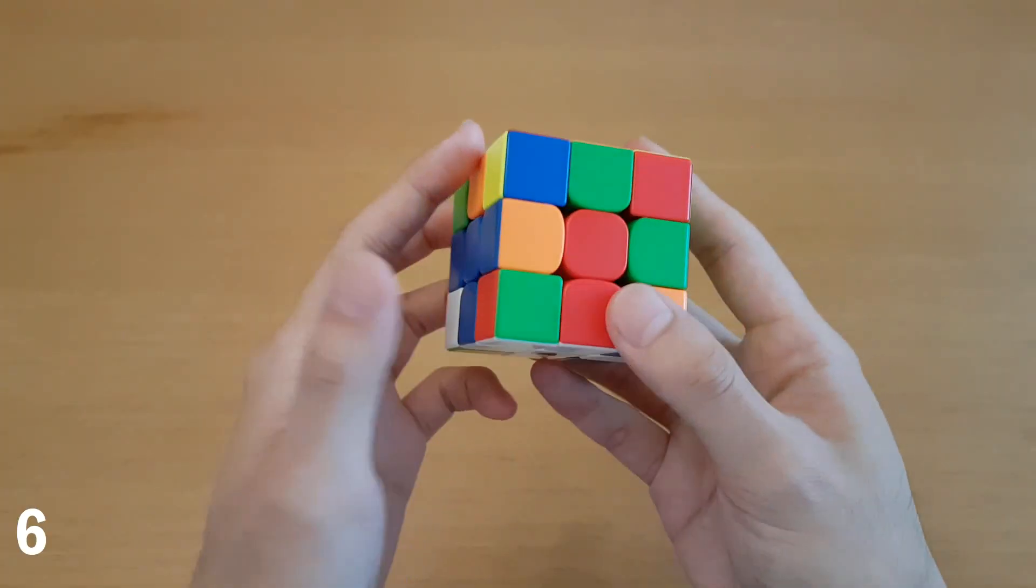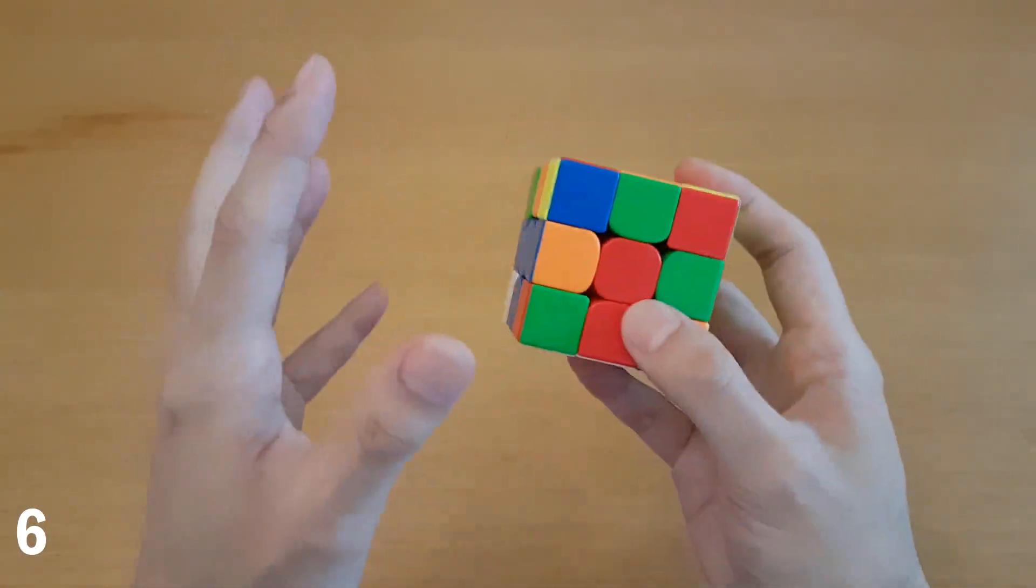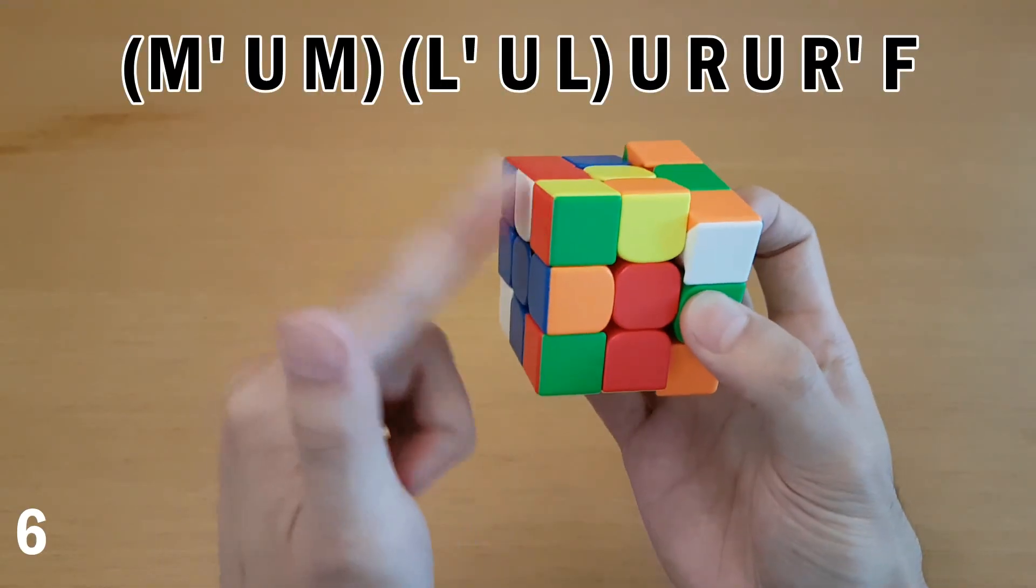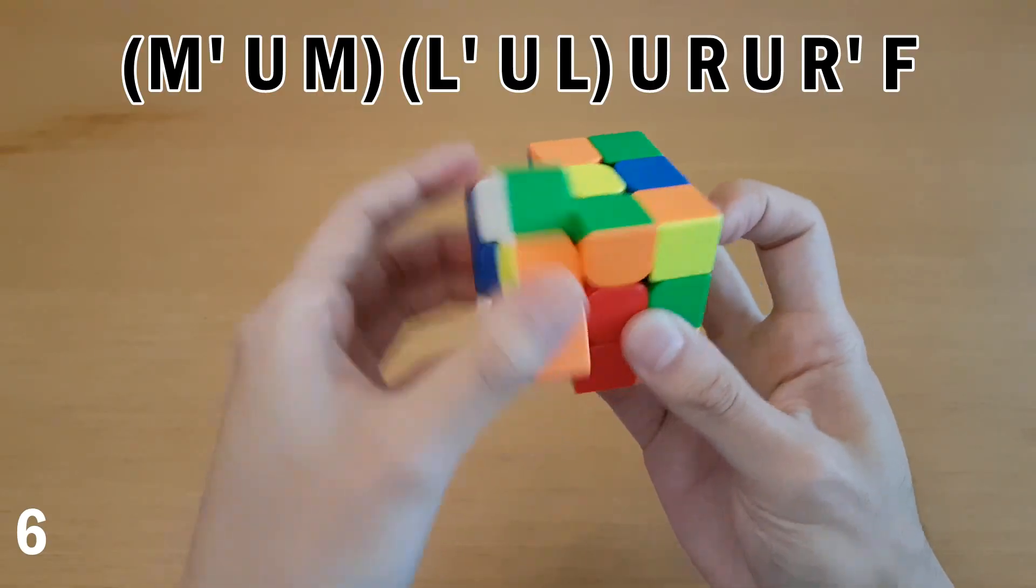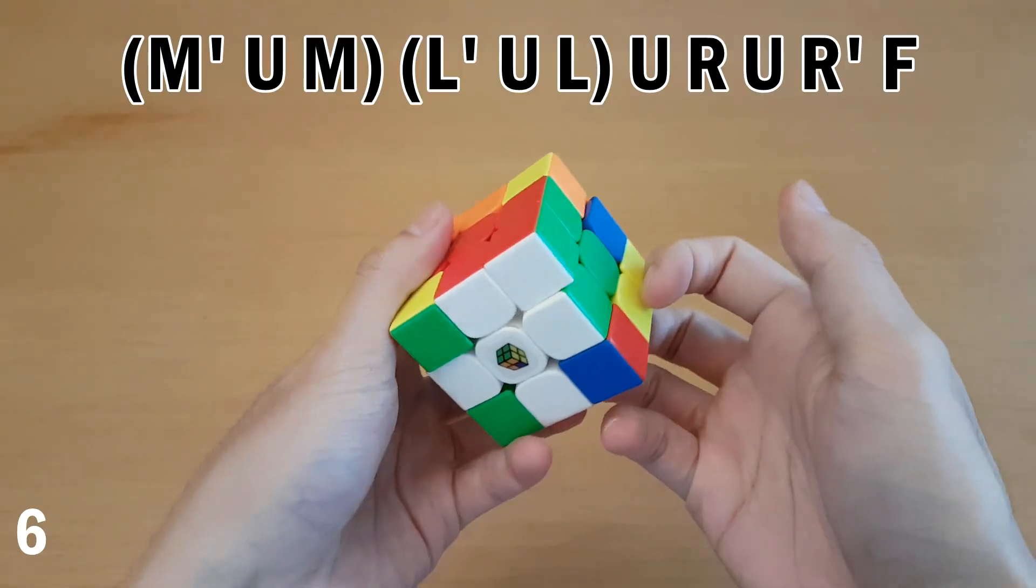And I just couldn't resist showing this one because it's so silly, but I do know another 10 move way to solve this case. I can't do it fast because it's kind of dumb, but here's what it is. You take out this edge, and then you take out this corner, and then you do this. That's also 10 moves.